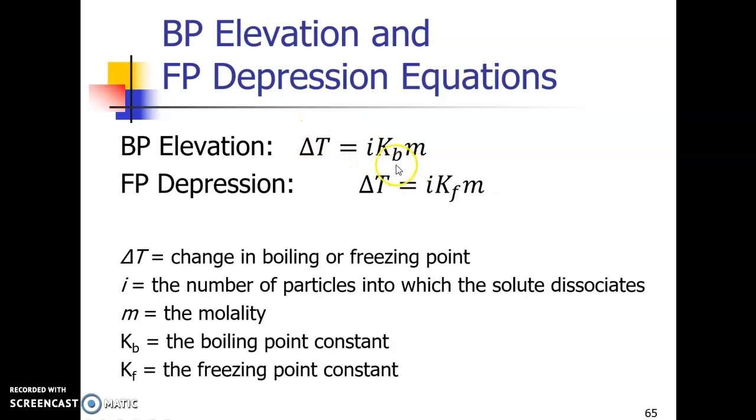If I knew how many particles my solute dissociates into, say I had sodium chloride, that number would be two for sodium chloride. And I knew the Kb value for the solvent involved, and I knew the molality of the sodium chloride that I was dissolving, then I could calculate the change in temperature of the boiling point. And remember it's boiling point elevation, so this temperature change would increase the boiling point, whereas this temperature change for freezing point depression would decrease the freezing temperature.